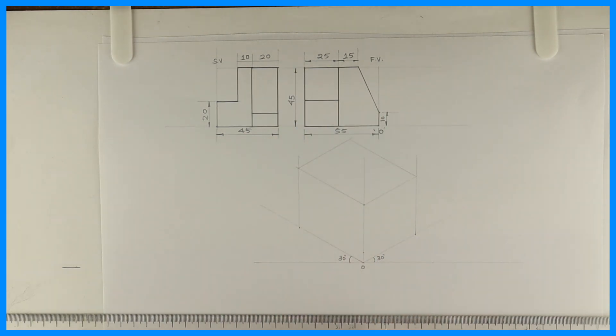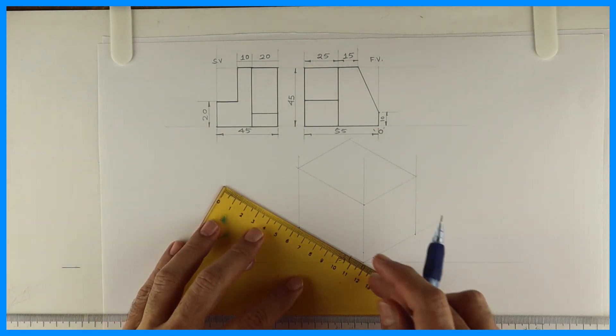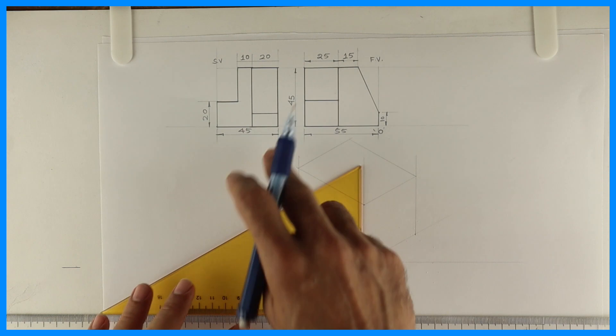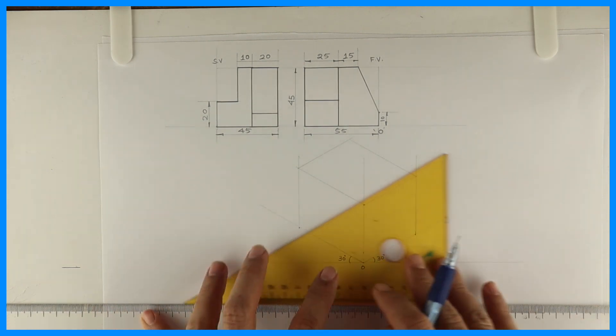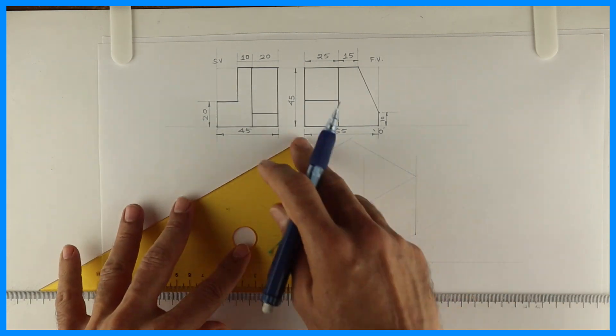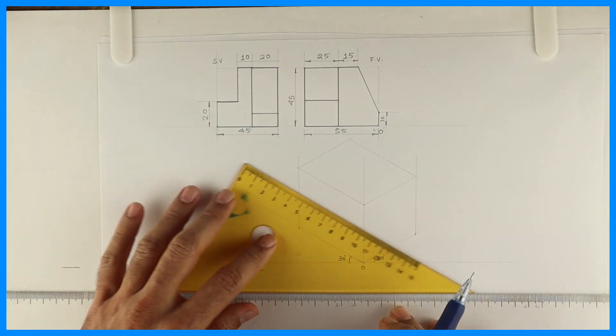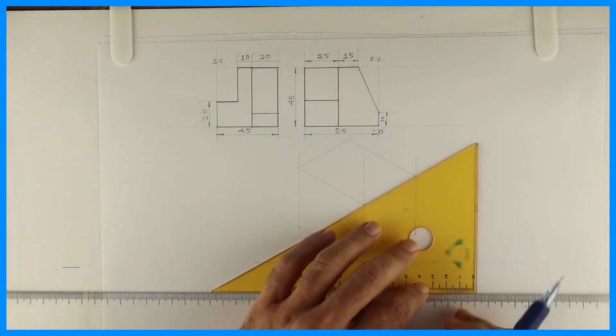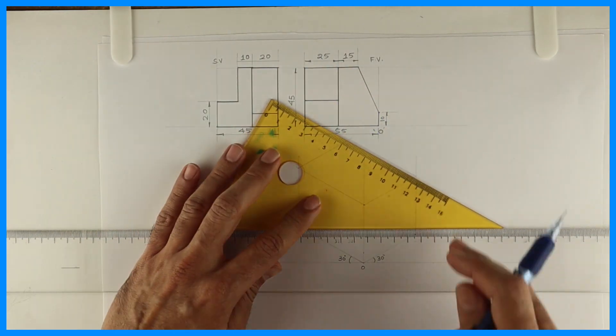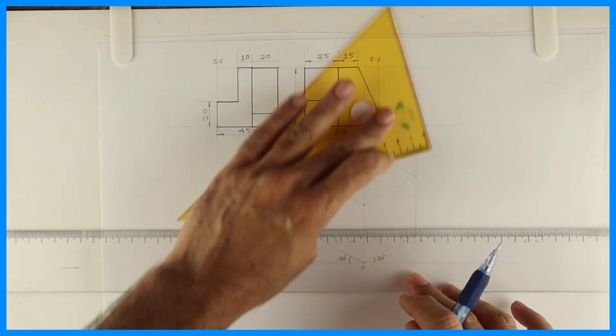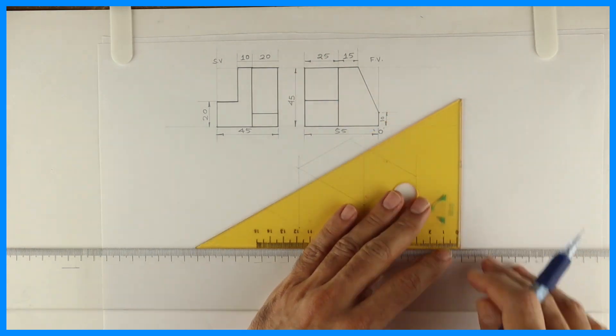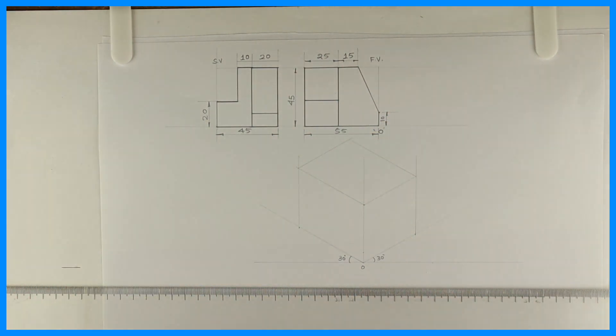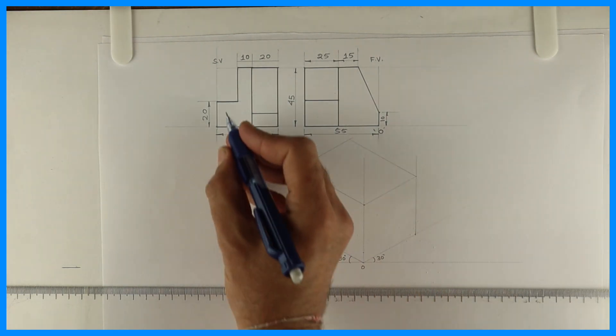So first we'll start with 55, we'll take 55 on the left hand side, height 45 and width 45. First we will draw that and complete the box.